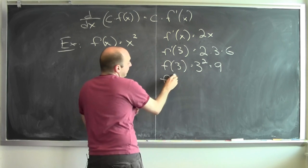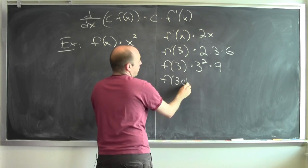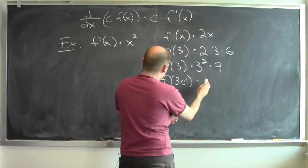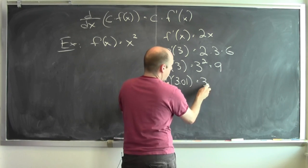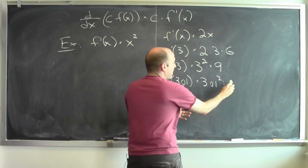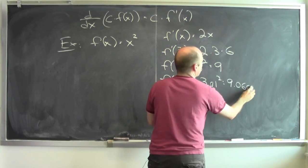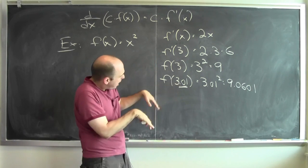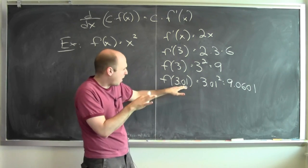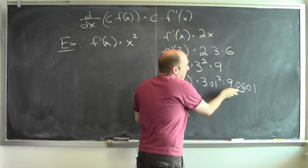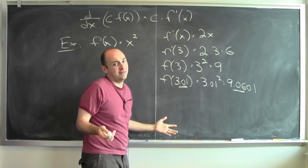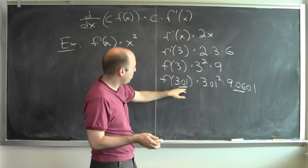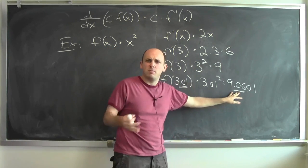But if I wiggle 3 a little bit, like 3.01, what is the function's value then? Well, you take 3.01, you square it, and you get 9.0601. So the input changed up by a little bit, 0.01 more, and the output changed by 6 times that amount. A little bit more than 6 times, but about 6 times that amount. The input change at 0.01 was magnified in the output by about 6 times.